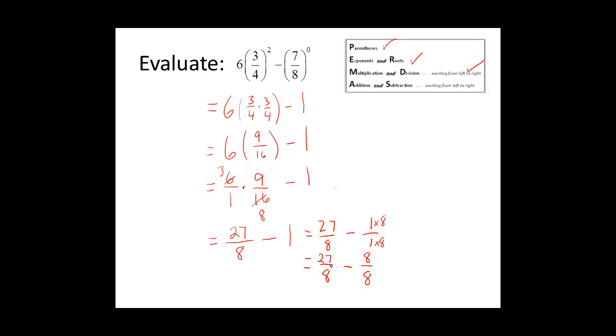So now we are going to subtract our numerators. 27 minus 8 is equal to 19 over 8. This is our answer as an improper fraction. We can change to a mixed number by putting the numerator inside the division sign and putting the denominator outside. 8 divides 19 twice with 3 left over. Our remainder is our numerator, and what we divide it by is our denominator. So this is the answer as a mixed number, 2 and 3 eighths.